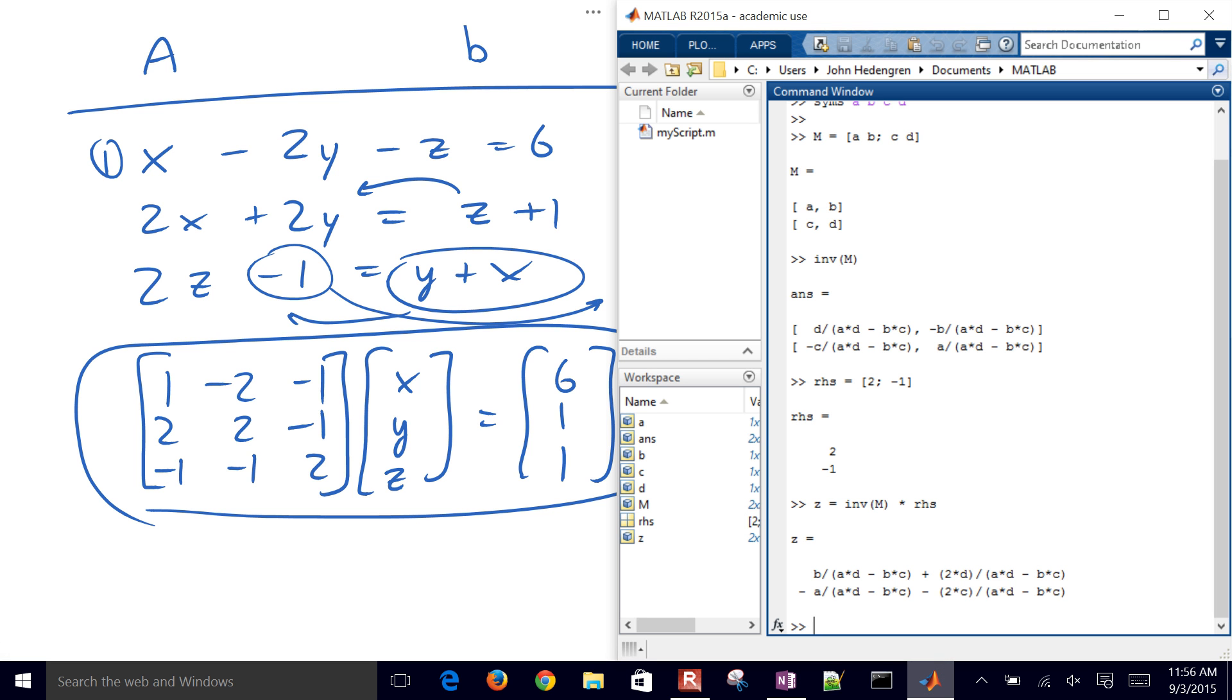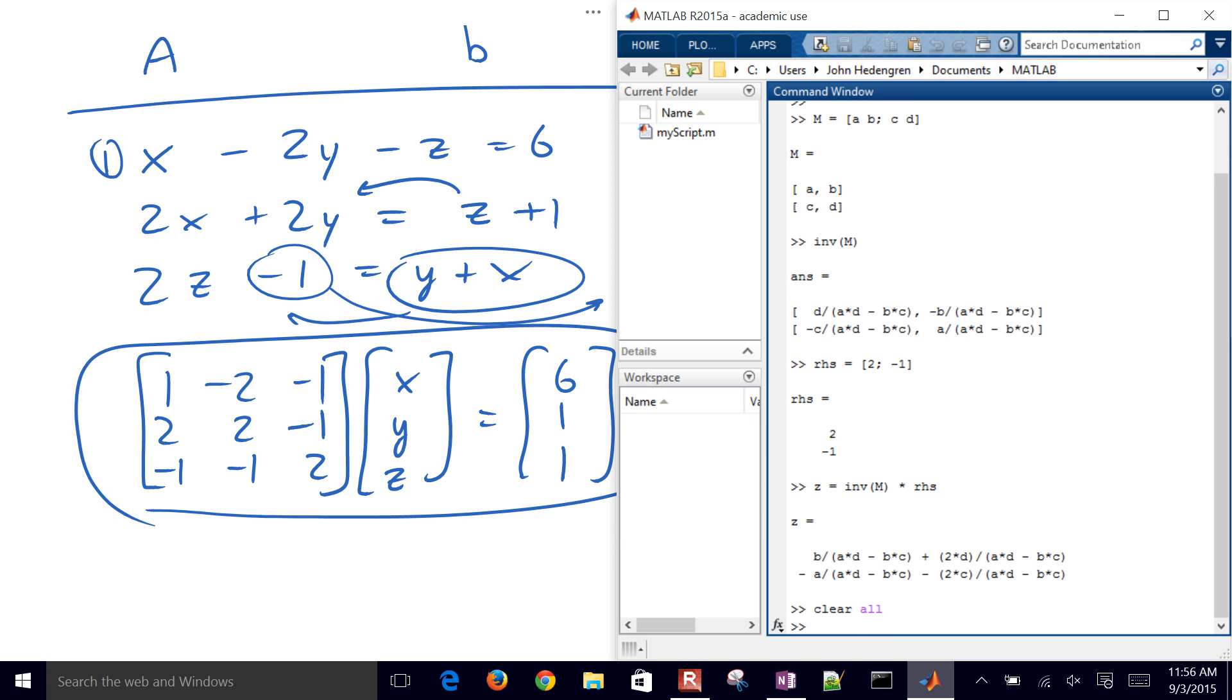So let's go through this final example. What we'll do is go ahead and just clear all, if you have any of those left variables left, and we'll go CLC as well just to clear the screen. And I'll say that my A matrix is going to be 1, negative 2, negative 1, start a new row with a semicolon, 2, 1, negative 1, and then negative 1, negative 1, 2.